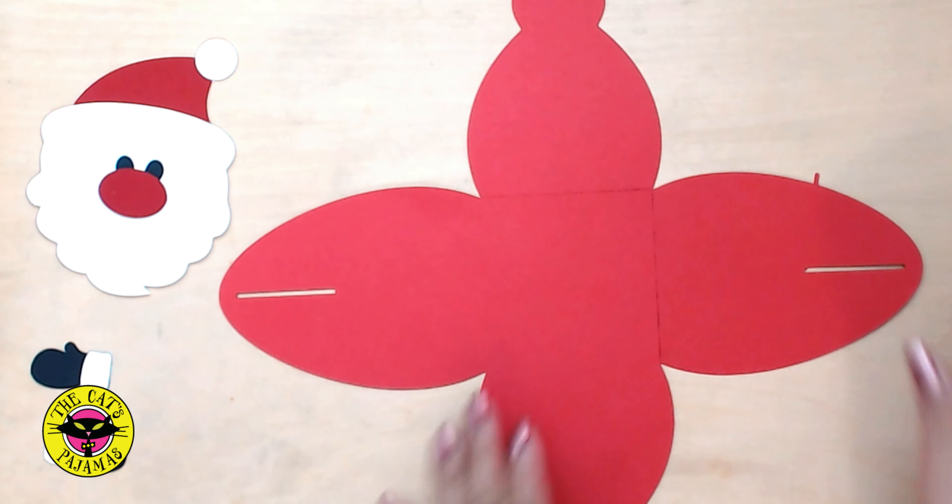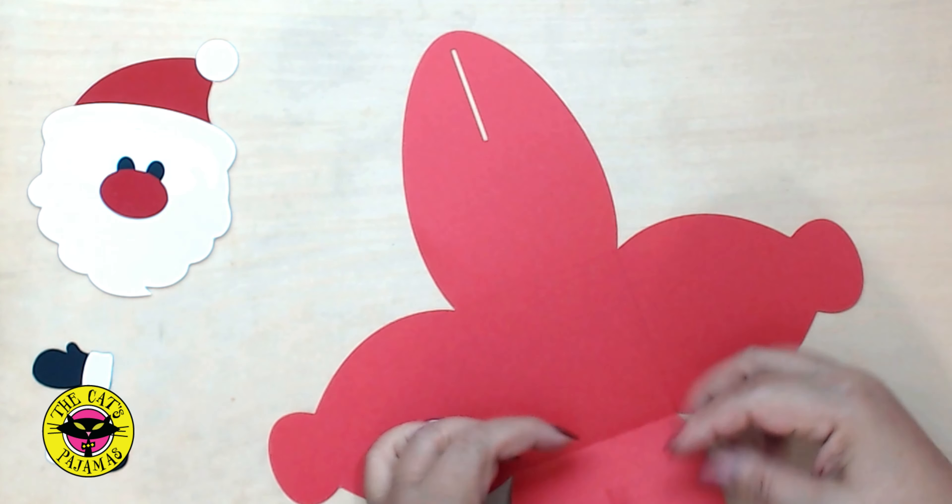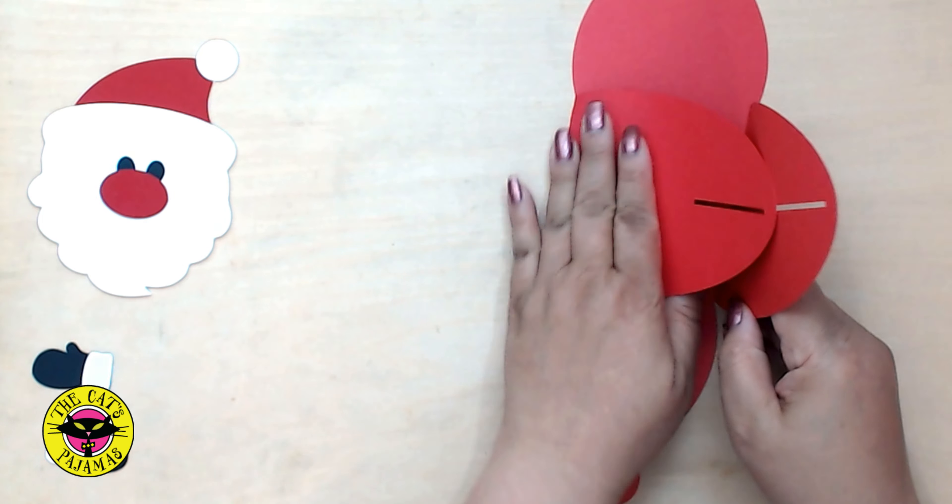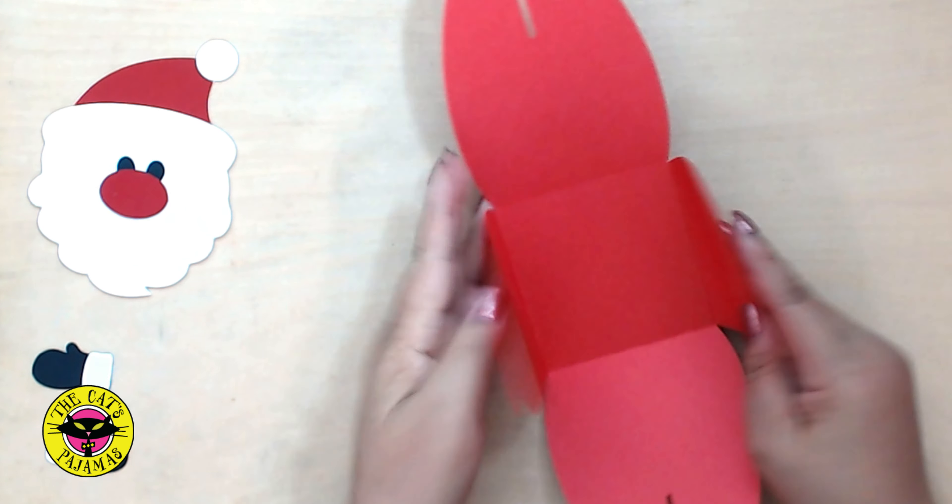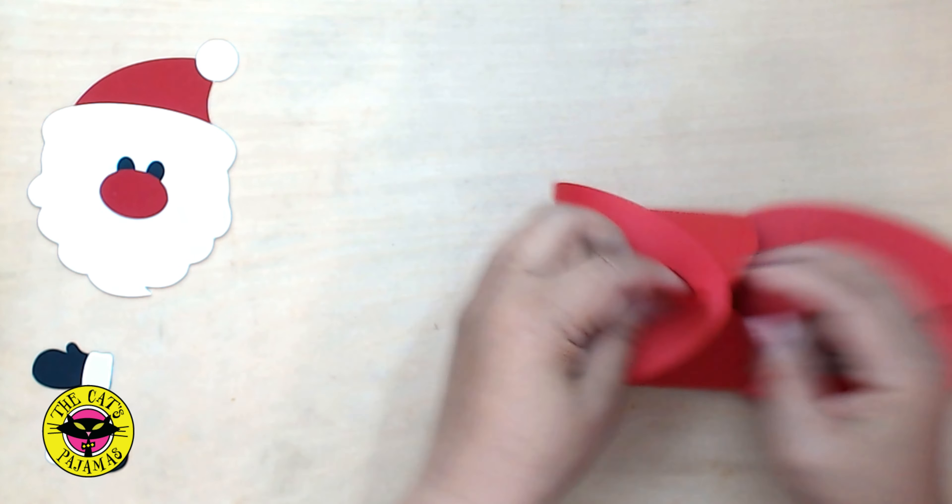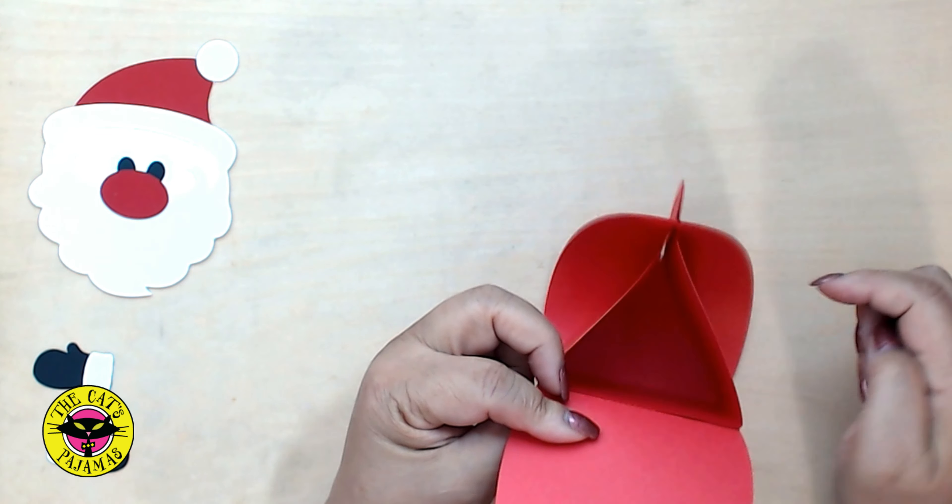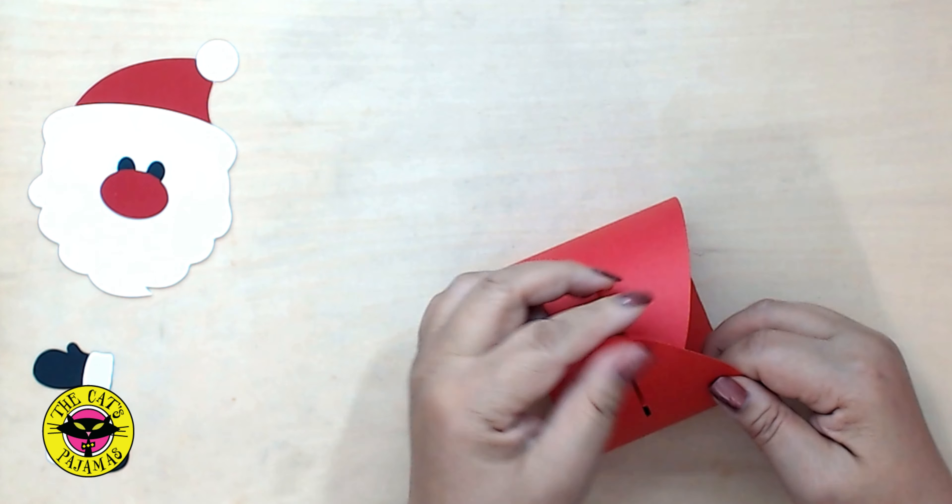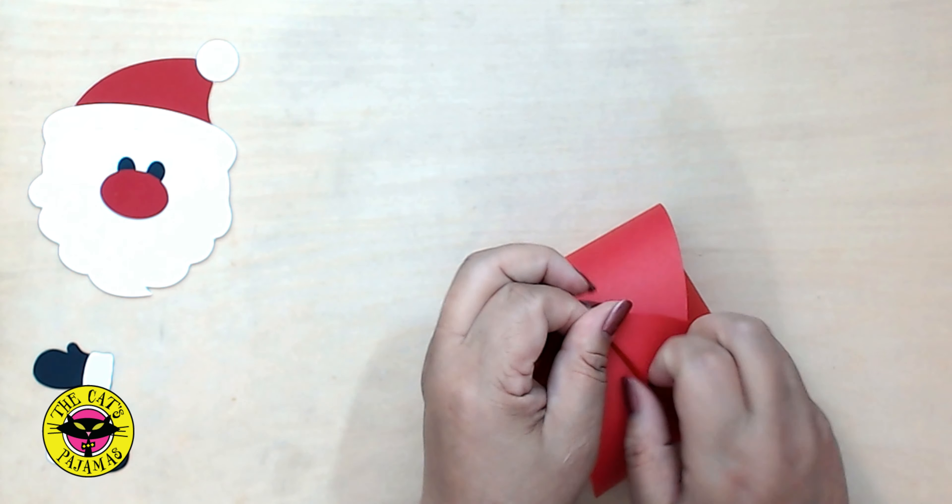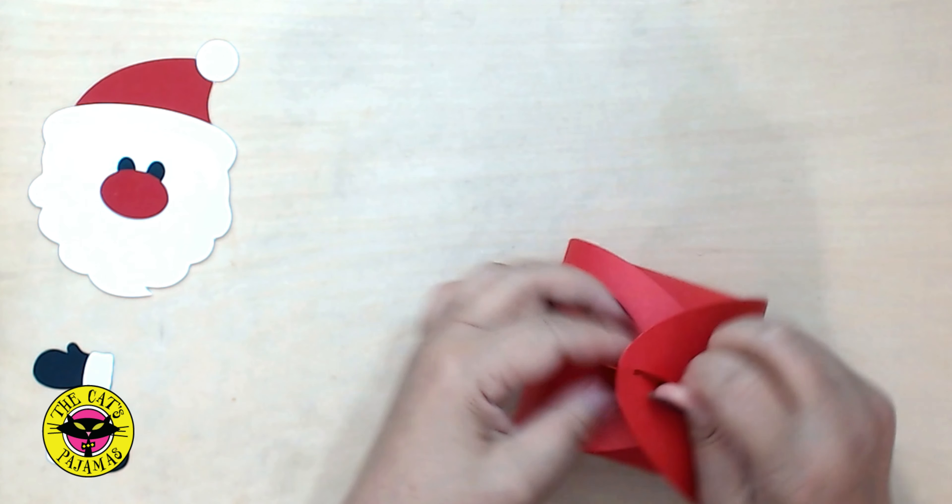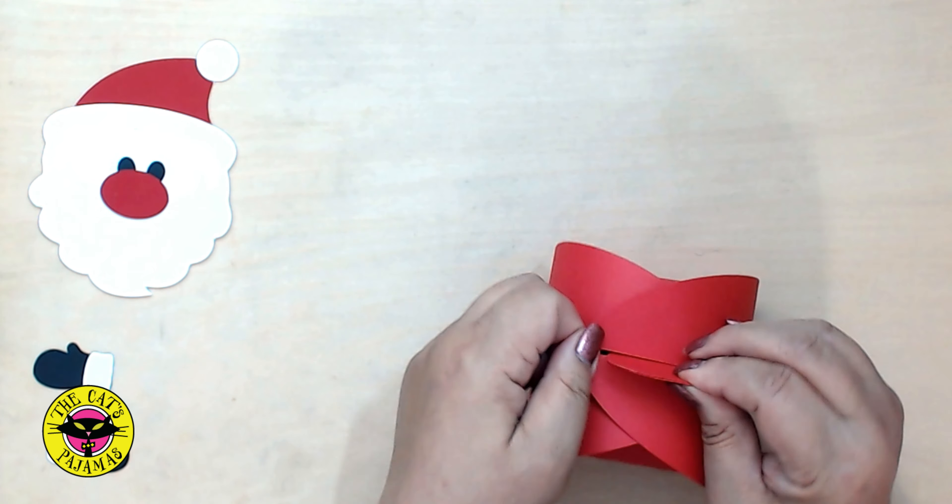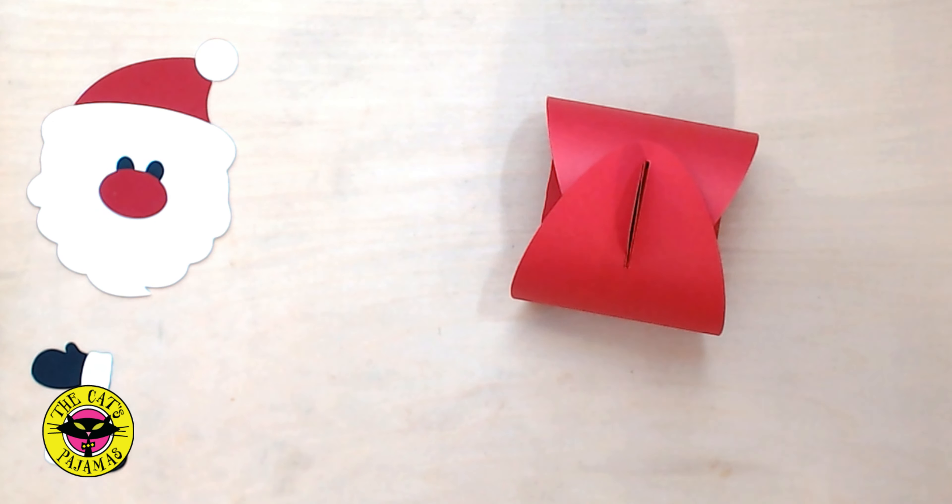Fold along the score lines and now you know the drill. Bring the two tab sides up and slide one of the slots over the tabs. We'll decorate this side with Santa.